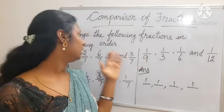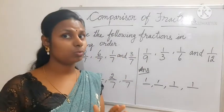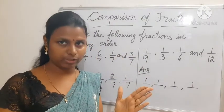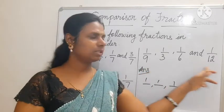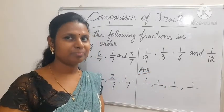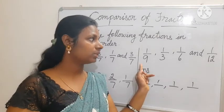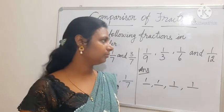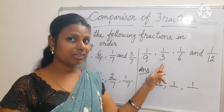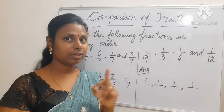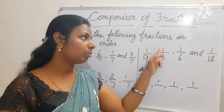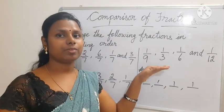Here we are writing descending order, that means we write the bigger value first - greatest number pehle likna hai. Which is the greatest number here? Think, tell me. 3 is the greatest number - 1/3 is the greatest fraction.